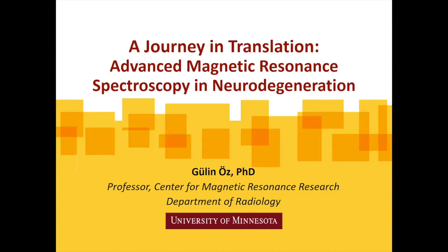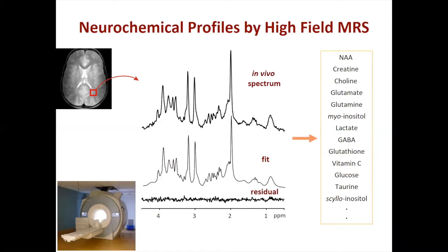First, a very quick background on MRS for those who may not be familiar with the technique on a day-to-day basis. Everything I will be telling you about will be on single voxel MR spectroscopy, where you select a region of interest, collect a spectrum, and in this spectrum each of these peaks are representative of a specific neurochemical.